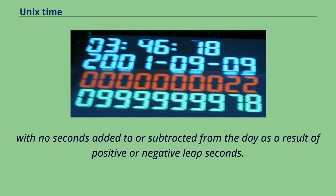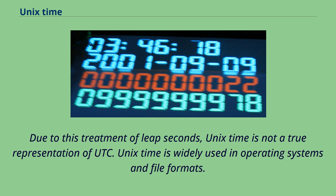Every day is treated as if it contains exactly 86,400 seconds, with no seconds added to or subtracted from the day as a result of positive or negative leap seconds. Due to this treatment of leap seconds, Unix time is not a true representation of UTC. Unix time is widely used in operating systems and file formats.